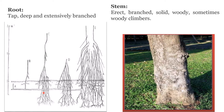Roots are extensively branched tap roots. You can see in this picture where the root is highly branched. Next is the stem. Stem is aerial, erect or rarely climbing, woody, branched, hard, cylindrical and solid.